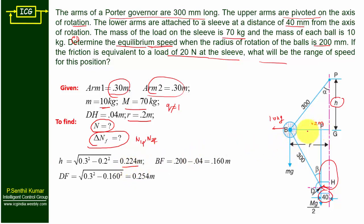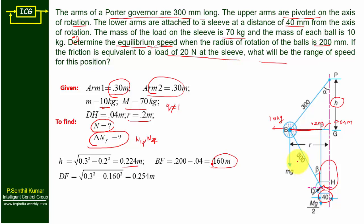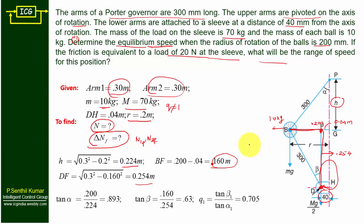Next, we find bf. BF equals pg minus fg. FG is given as 40 mm = 0.04 m, and pg = 0.2 m, so bf = 0.2 − 0.04 = 0.16 m. Then df equals the square root of 0.3² minus 0.16², which gives df = 0.254 m. This is the adjacent side for angle beta.